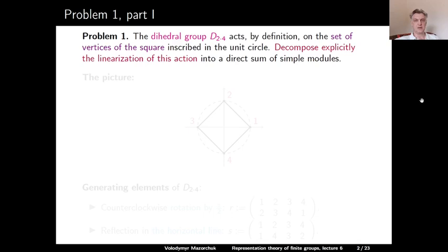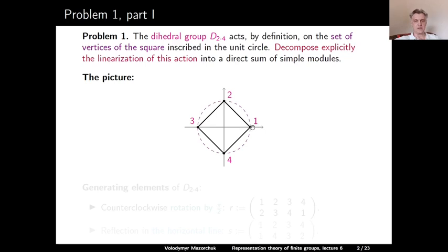Here is a picture illustrating the setup. We have R² and the unit circle in it. We have the square inscribed in this unit circle such that one of the vertices is the point (1,0). Let us denote the vertices of the square by 1, 2, 3, and 4, starting from our special vertex (1,0) and going around the circle in the counterclockwise direction.